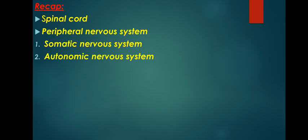The autonomic nervous system is the part of the peripheral nervous system that is responsible for regulating involuntary body functions such as blood flow, heartbeat, digestion and breathing. In other words, it is the autonomic system that controls aspects of the body that are usually not under voluntary control. The autonomic nervous system is further divided into two branches: the sympathetic nervous system and the parasympathetic nervous system.